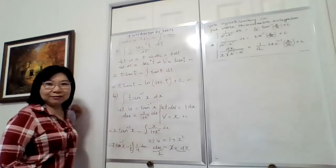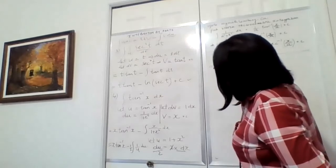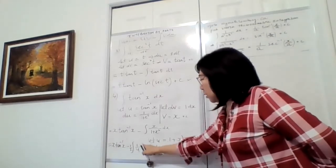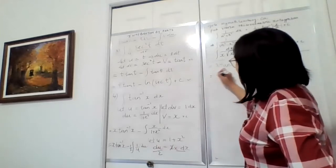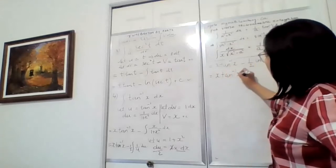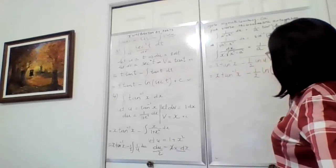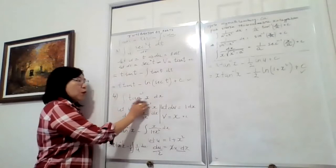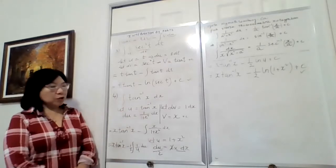Back into the substitution rule from last week. The answer is x·arctan(x) minus (1/2)·ln|u| plus C. Substituting back u = 1+x², we get x·arctan(x) minus (1/2)·ln(1+x²) plus C. And this is our answer. Now you understand why we use integration by parts even for just one function when it's an inverse trigonometric function.